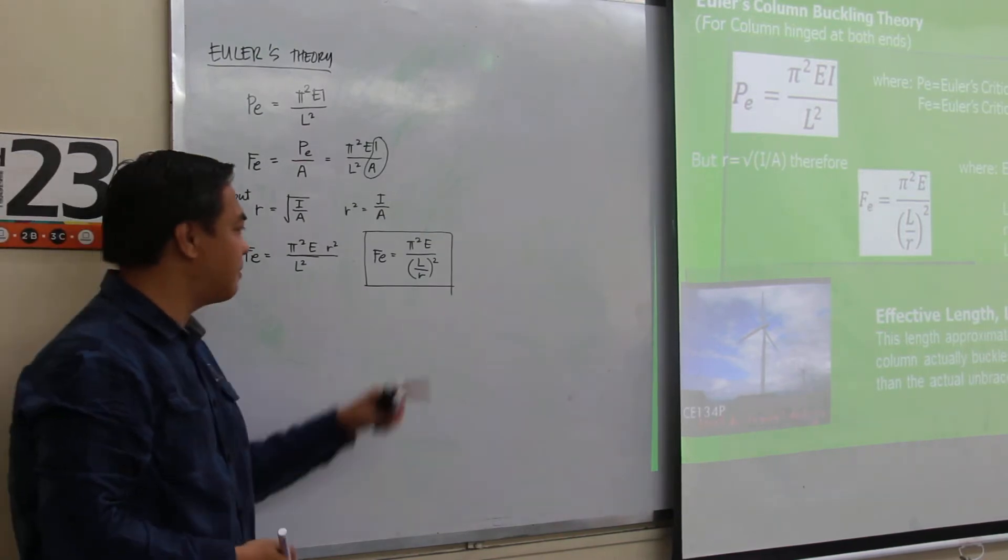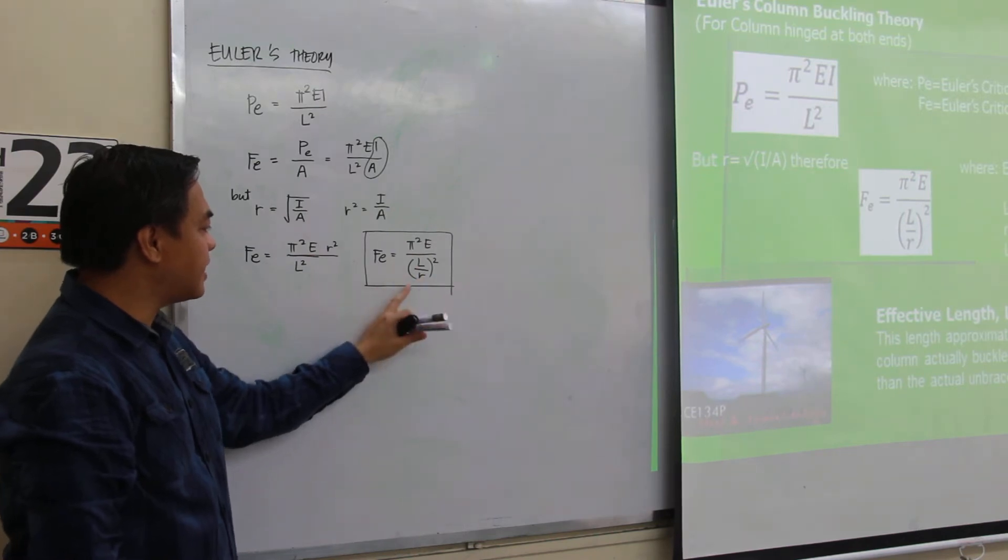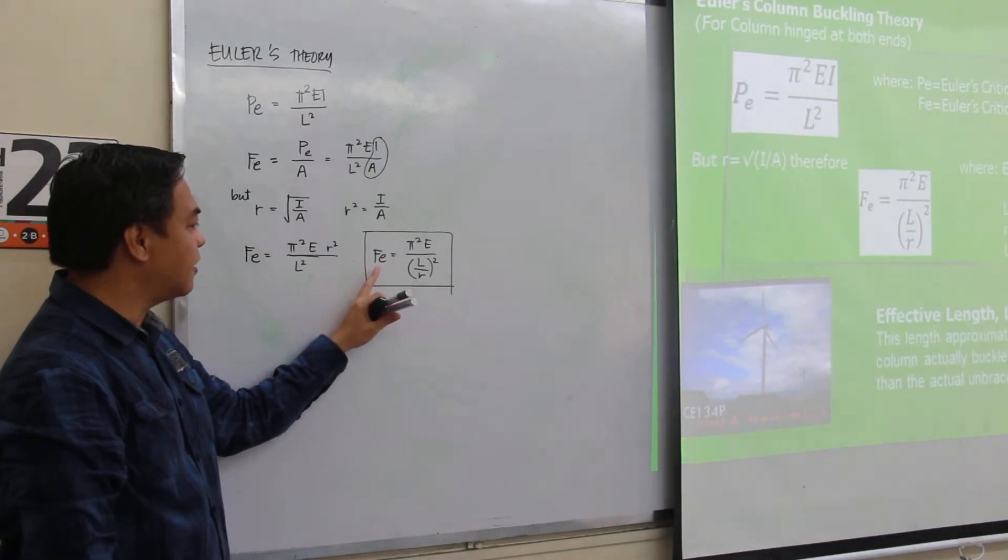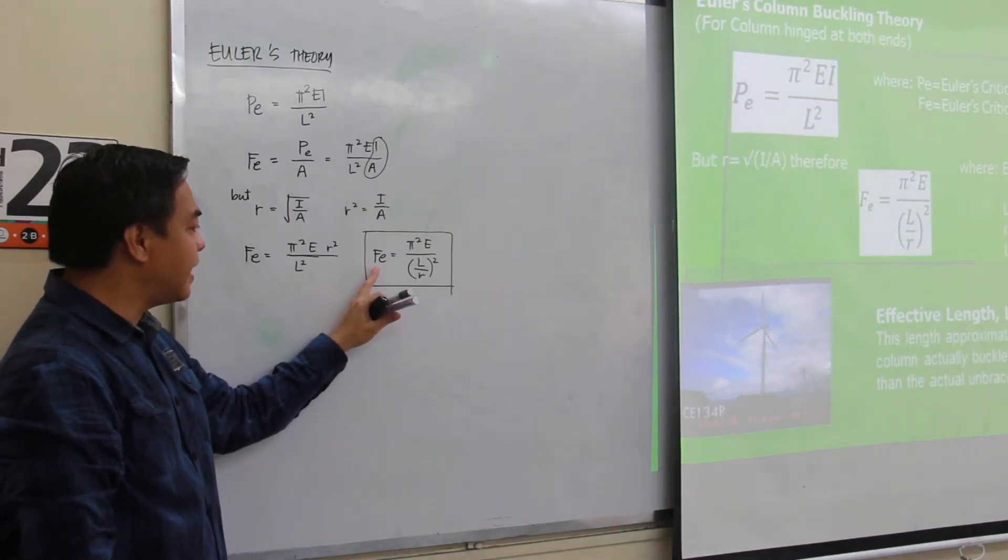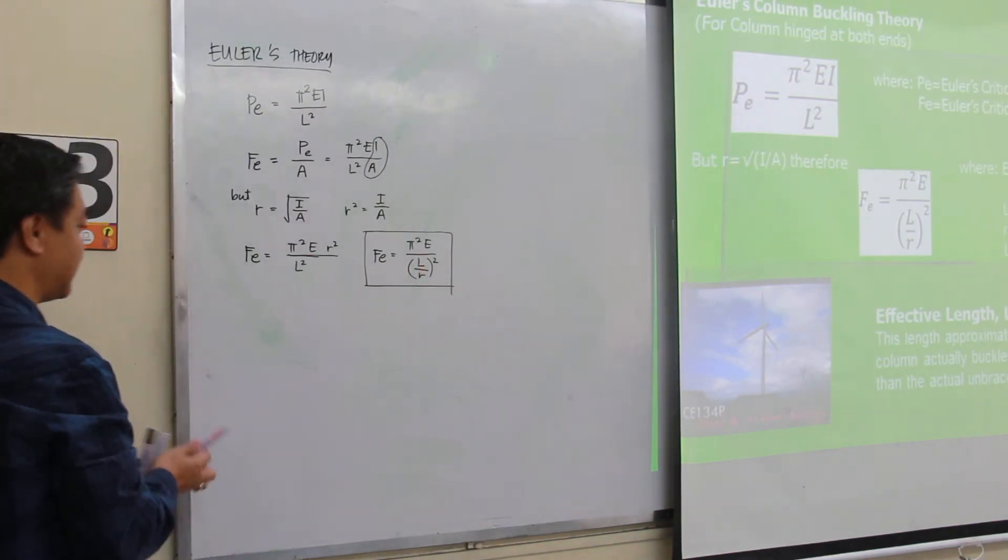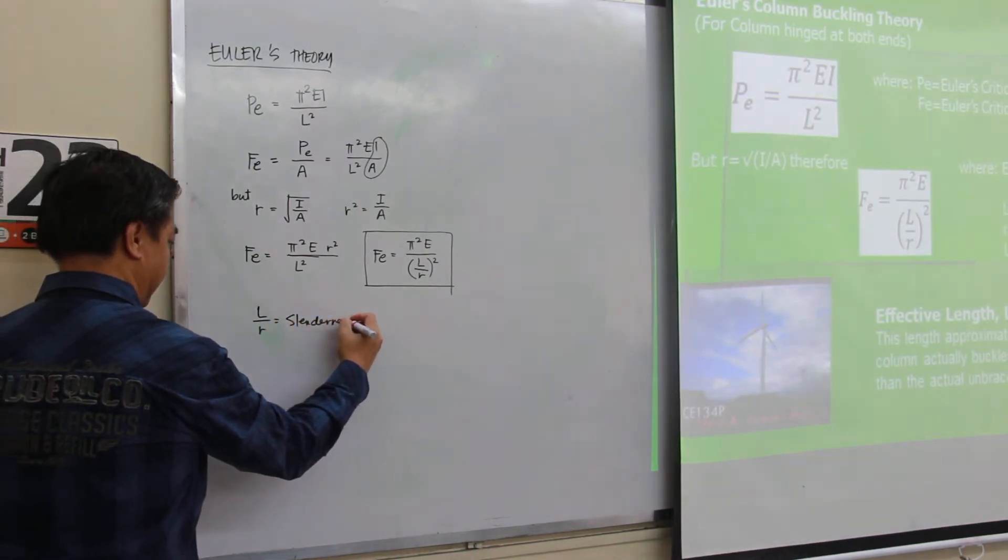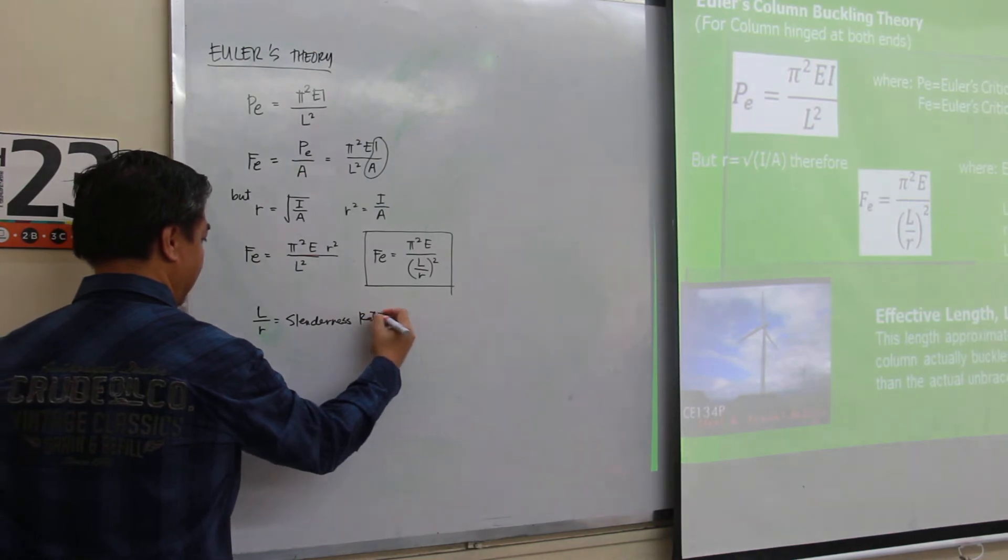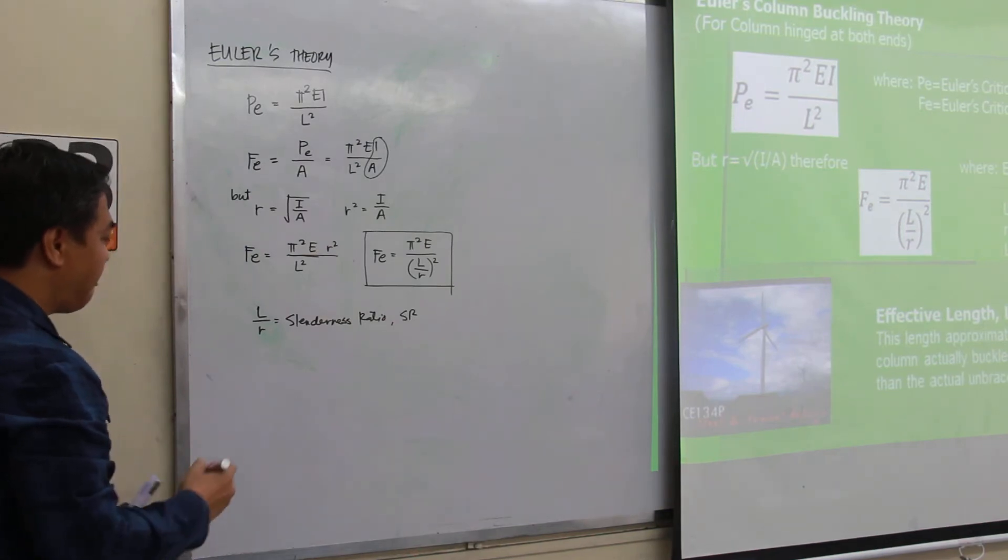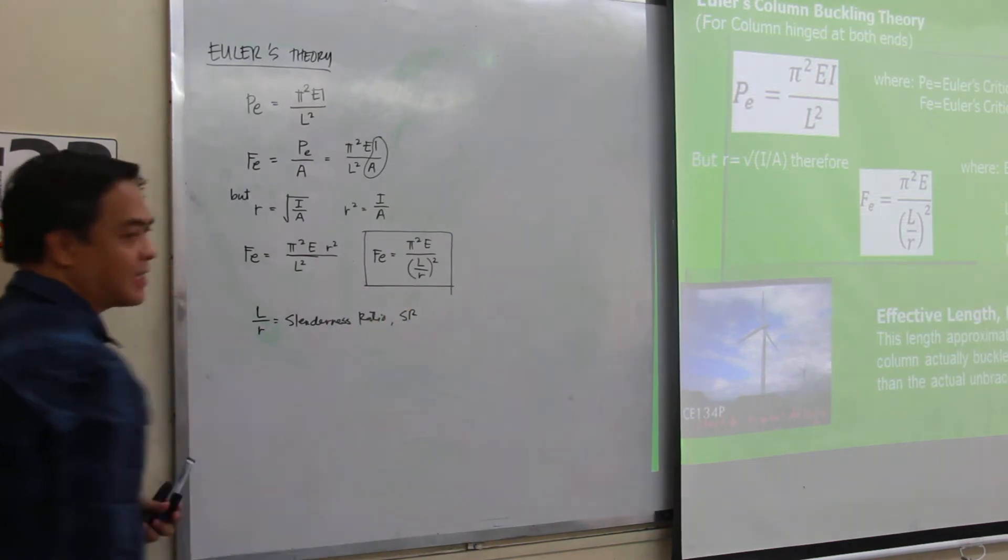As you can see from this equation, the numerator is a constant, pi squared E, then the denominator is the square of the L over r. So the strength or the stress on the compression member entirely depends on the ratio of L over r. That L over r ratio is known as the slenderness ratio, or SR. Now, what can you say about the strength or the stress of the compression member as a function of its slenderness ratio? What if we have larger slenderness ratio? What can you say about its strength or stress?